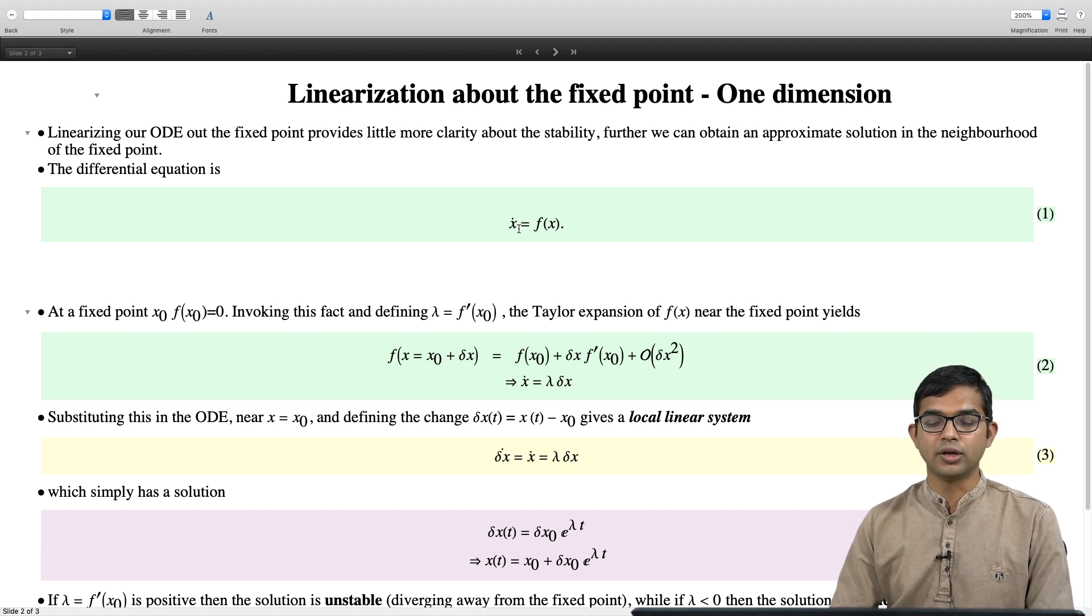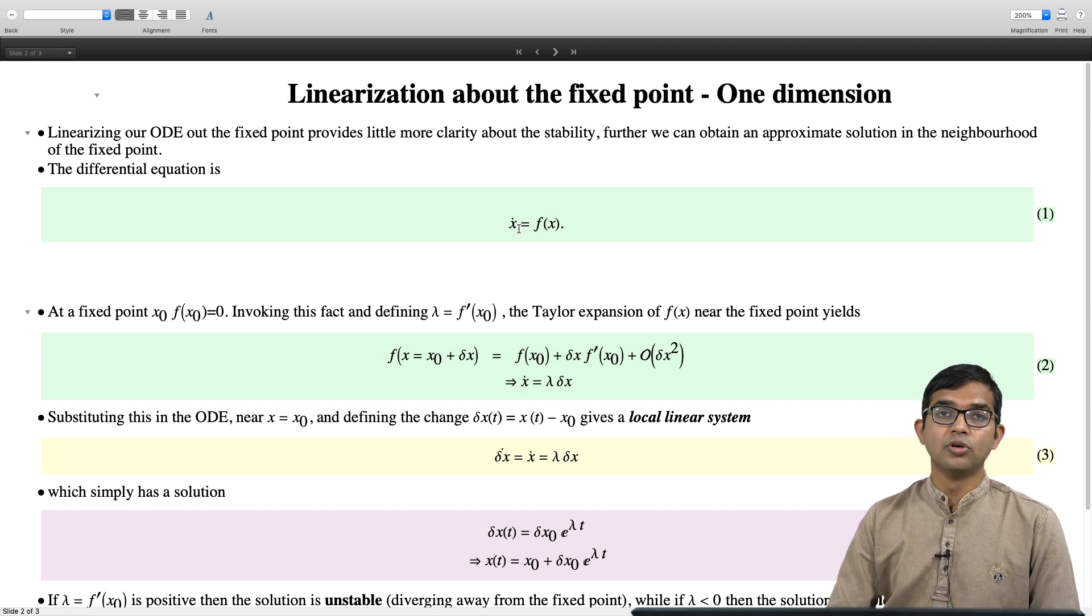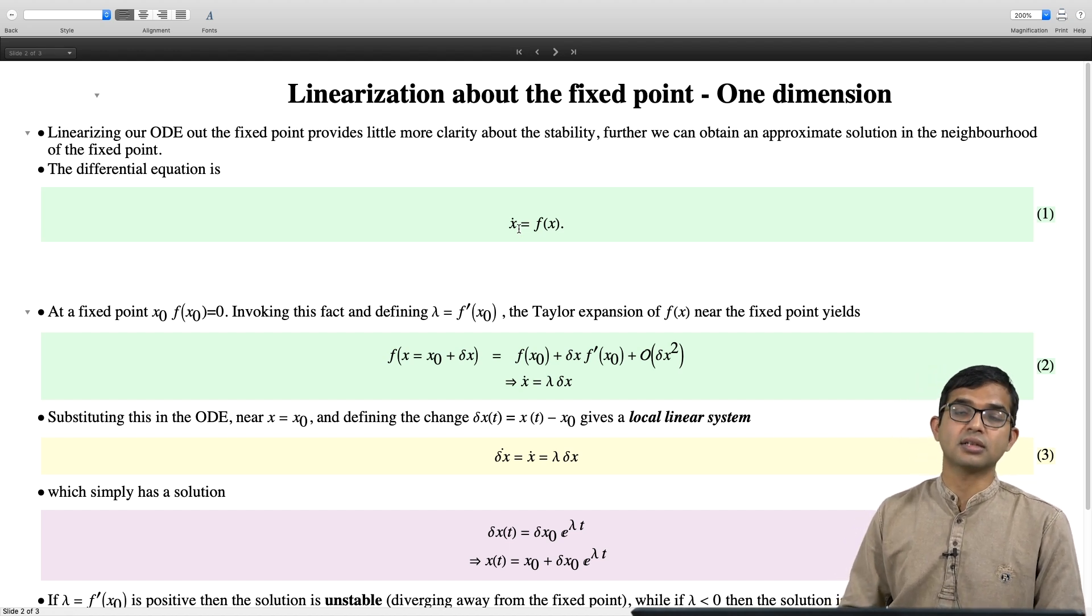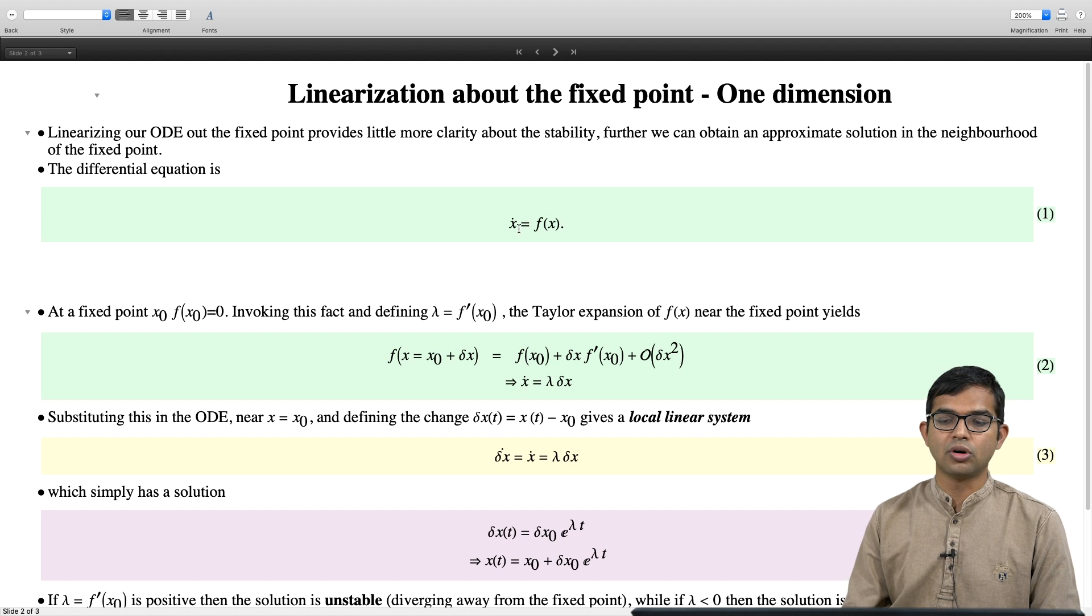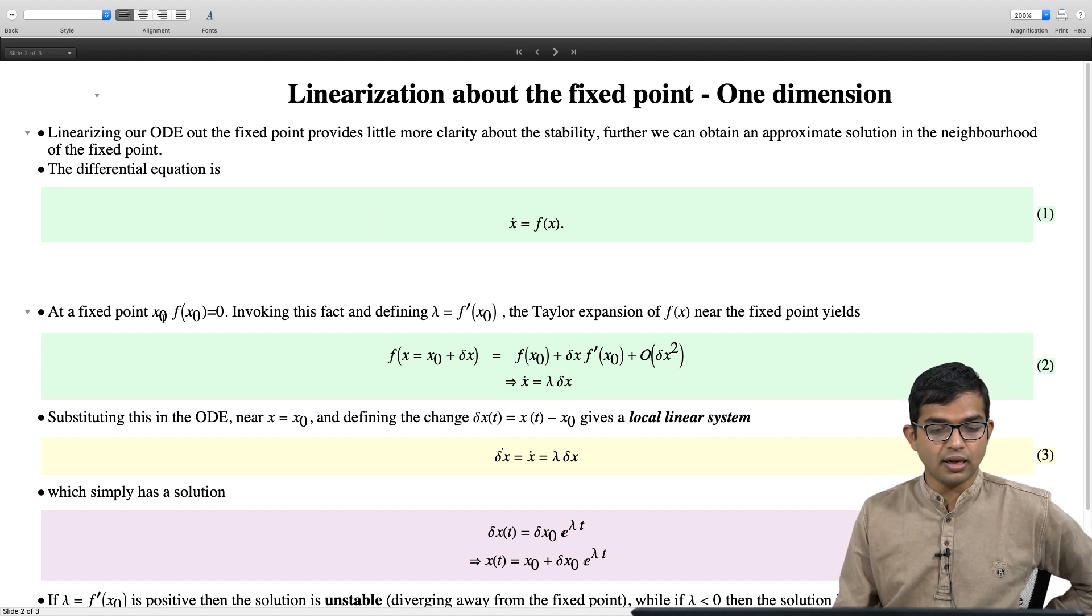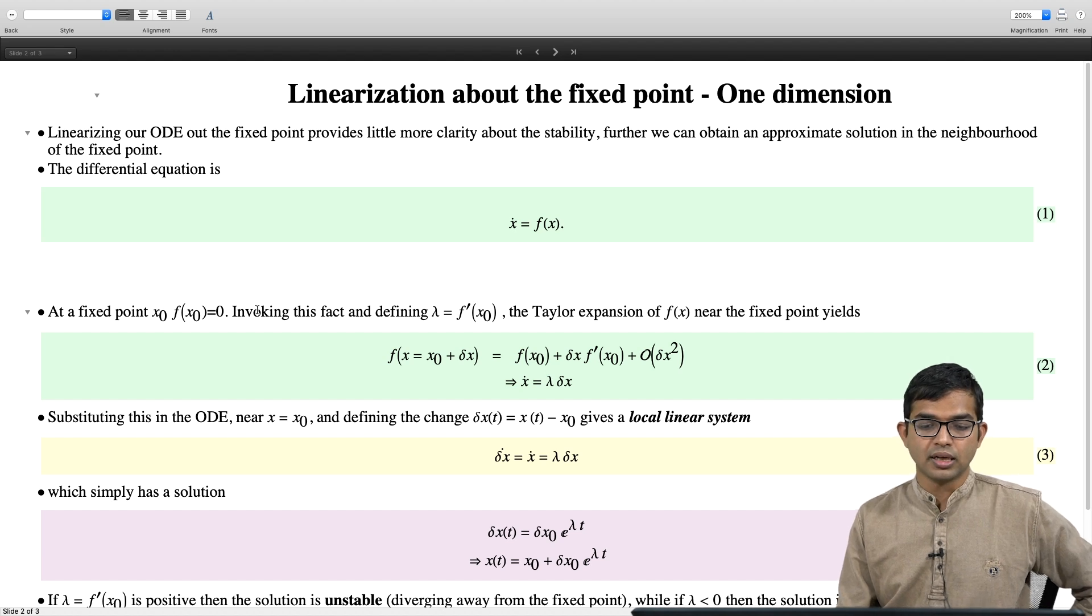It is intuitively clear what it means. Basically, if you are at a fixed point, there is no flow. Your system is basically stuck there forever, if you are at the fixed point. And in 1D, this is particularly restrictive. If you are at an x naught which is a fixed point f of x naught equal to 0, x dot is 0 and therefore x is going to be the same point x naught forever all time.